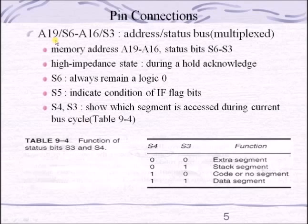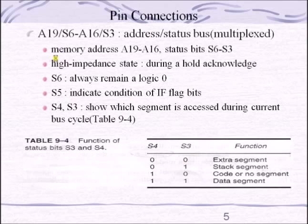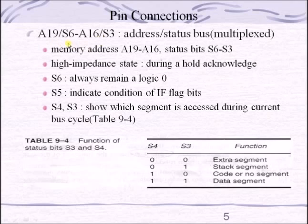Pins A16 to A19 are also called multiplexed lines because they carry address information as well as status information. Combined with AD0-AD15, there are a total of 20 address lines (A0 to A19), so the 8086 can address up to 1 MB of memory, which is 2 to the power of 20. It also has 16 data lines, D0 to D15. The A16-A19 pins carry address during T1 and provide status information at other times.